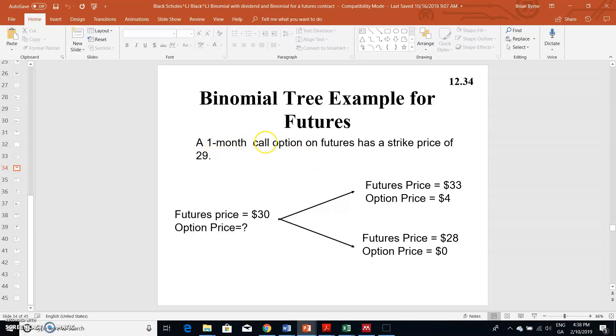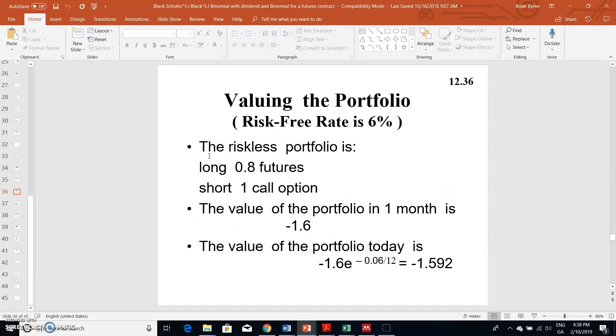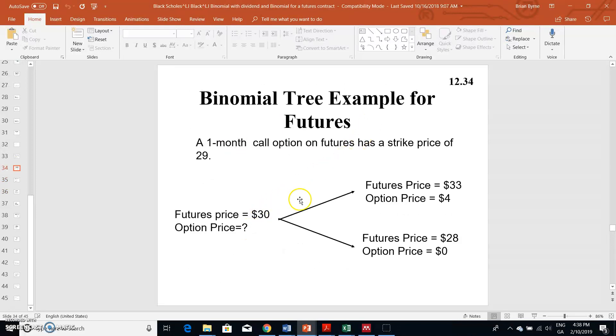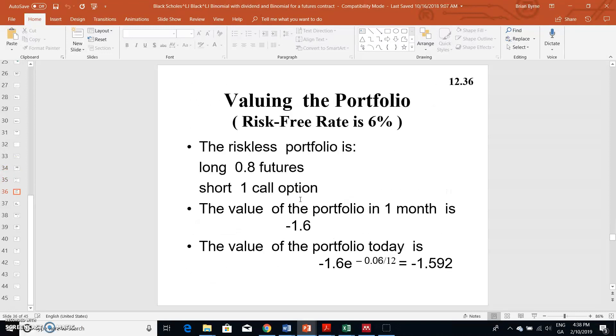In a situation where we have a one-month expiry on the call option on the futures where the strike price is $29 and the interest rate is 6%, we can work out the value of the call option using a no-arbitrage approach.